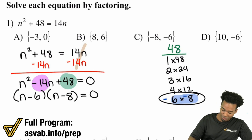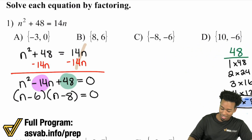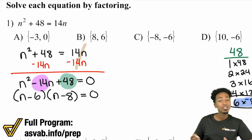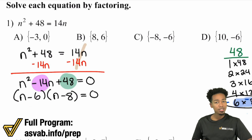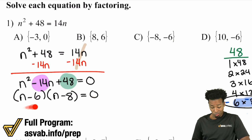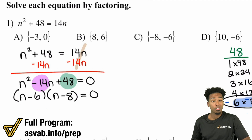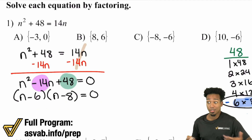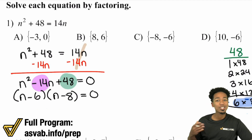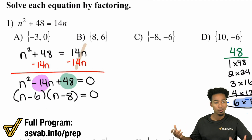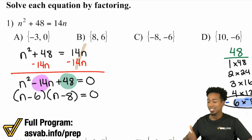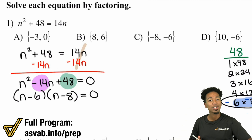Now we factor: we have n minus 6 times n minus 8 equals zero. Now we can apply that zero product property. As a quick refresher, the zero product property says: if you're multiplying this times this and it equals zero, then one of these or both of them have to be zero. So I'll set each piece equal to zero, find out what that number is, and we're good to go.